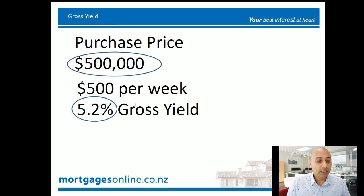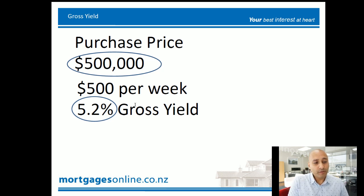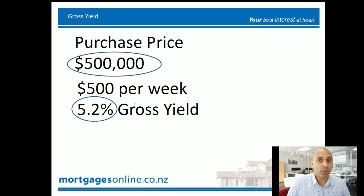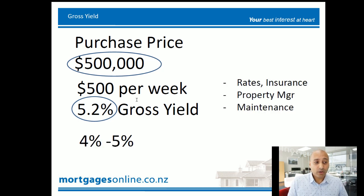Now what is it handy for? Different properties at different amounts with different rents — it's just a good way to compare between them. Also, if you know that the gross income is 5.2% per annum and the bank rates are running at say 4 to 5%, then you kind of know that in that situation there isn't a lot of fat to pay for your other expenses. So you might be shelling out a little bit from your pocket to hold on to a property with a gross yield of 5.2% when interest rates are 4 to 5%. Other expenses are things like your rates, insurance, property manager, and maintenance.